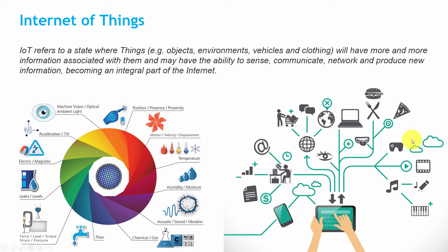It can be an interaction between two machines, or between a machine and a human. A human can control all these machines independently via his laptop, mobile, and can send email, SMS. He can access the share market, grocery, chat, web access, food, pizza order, cloud computing, and more.